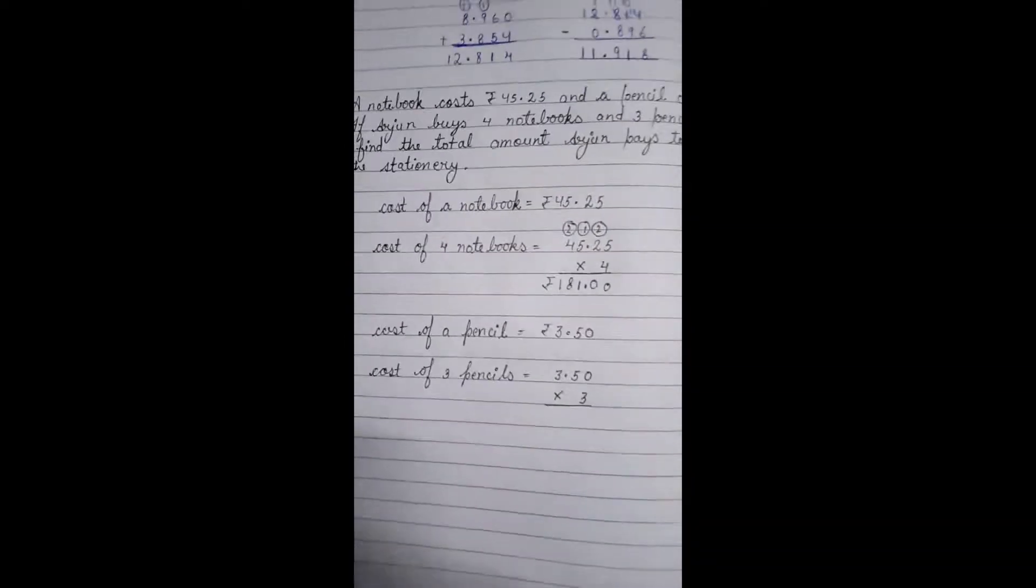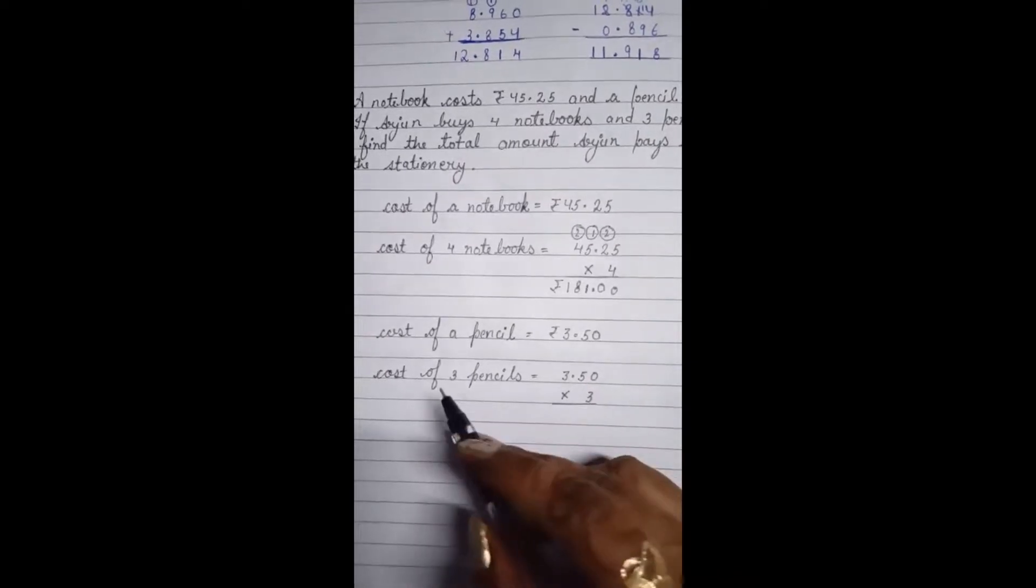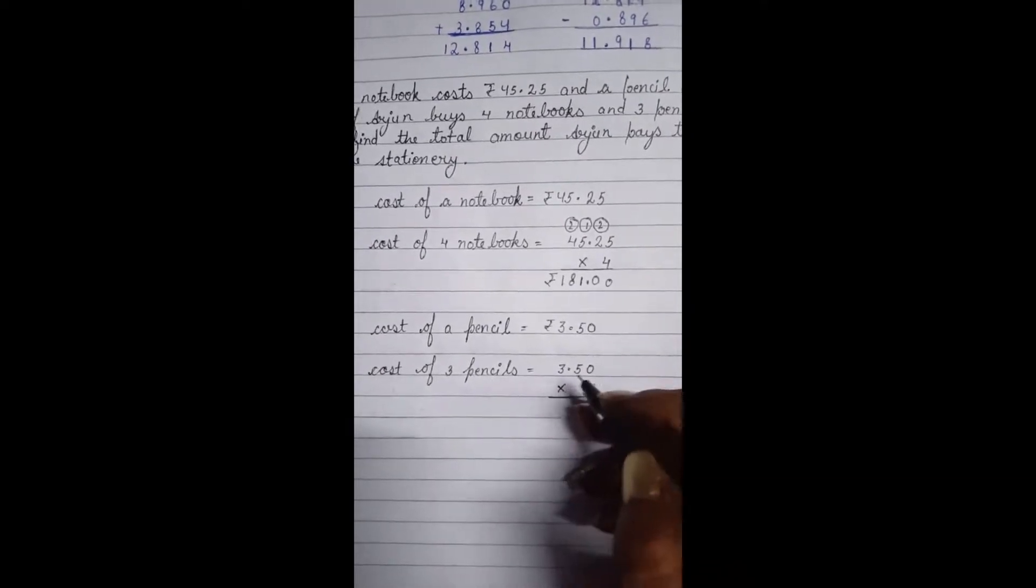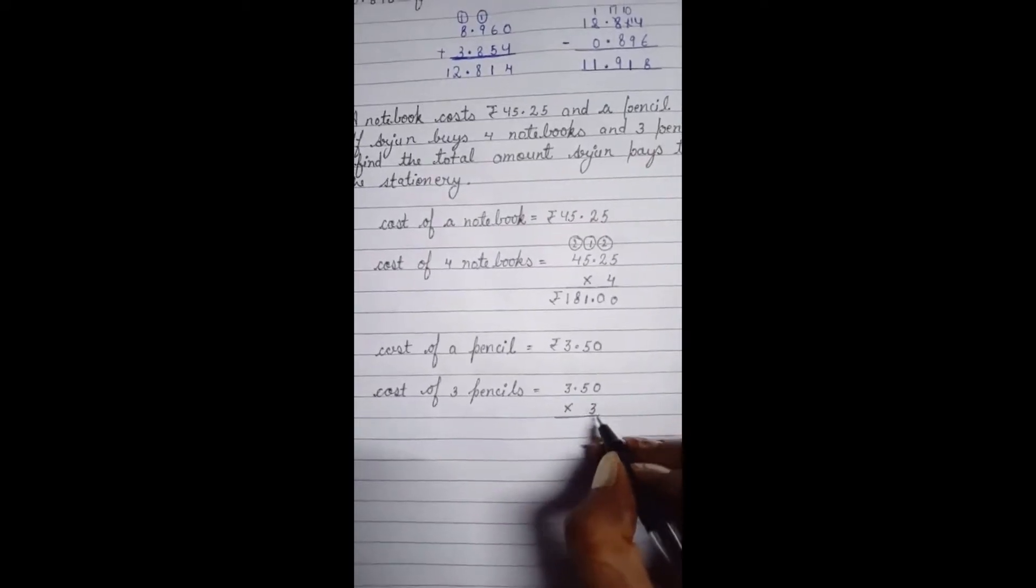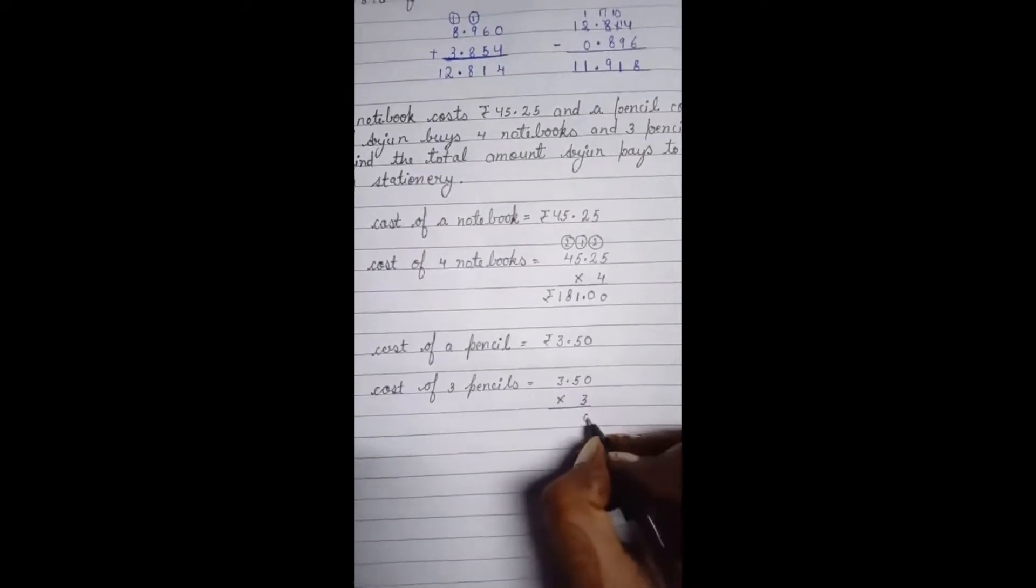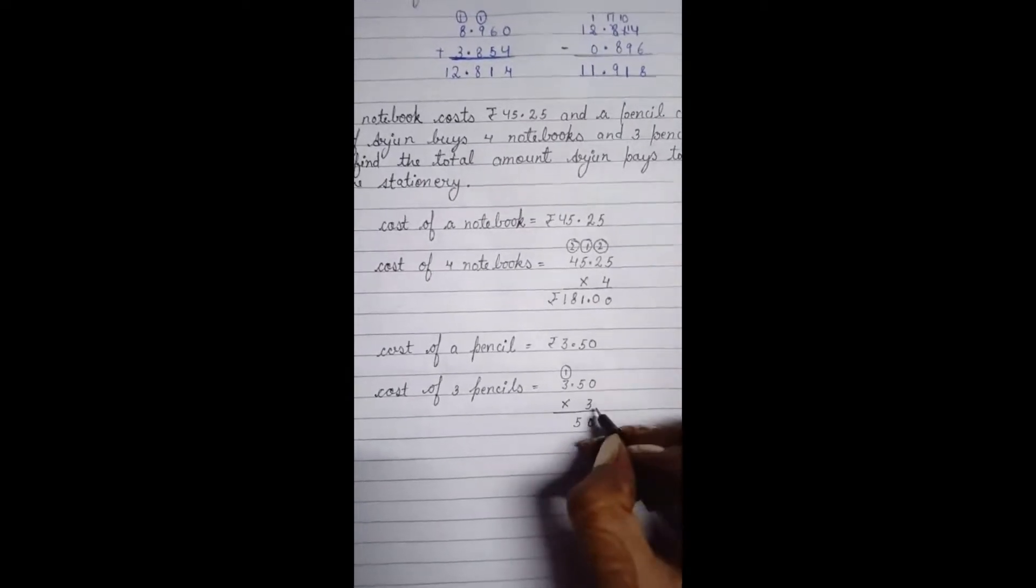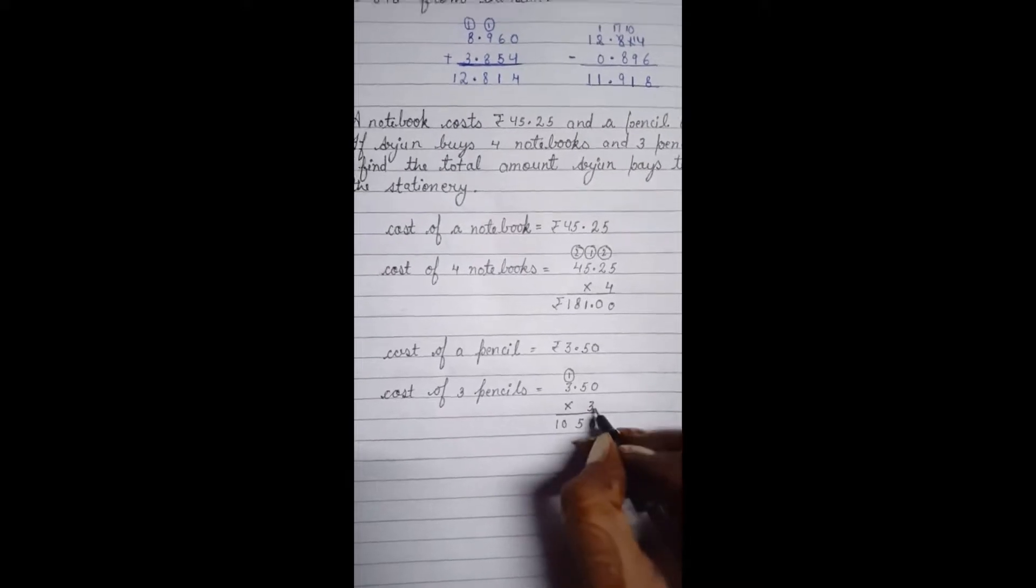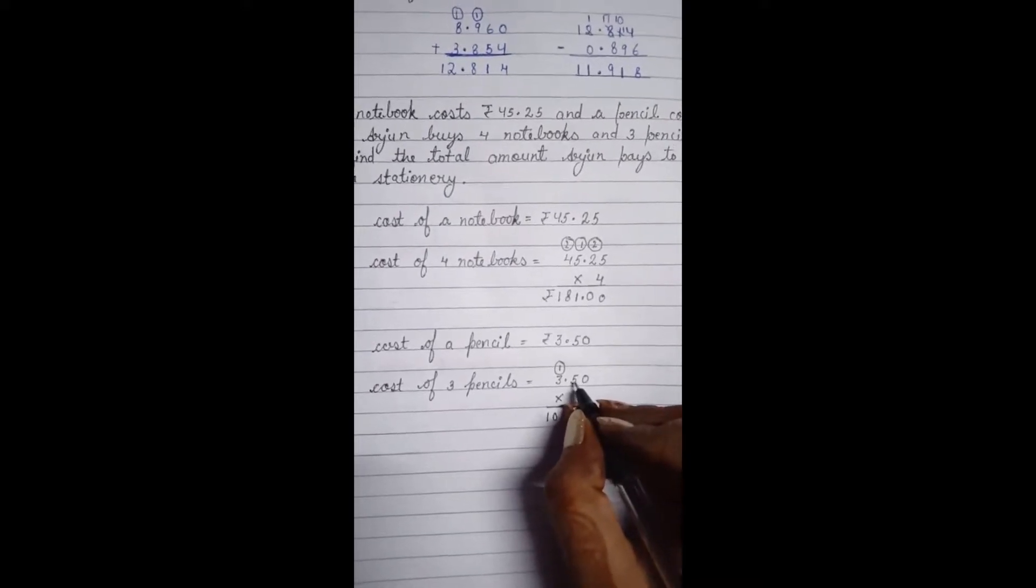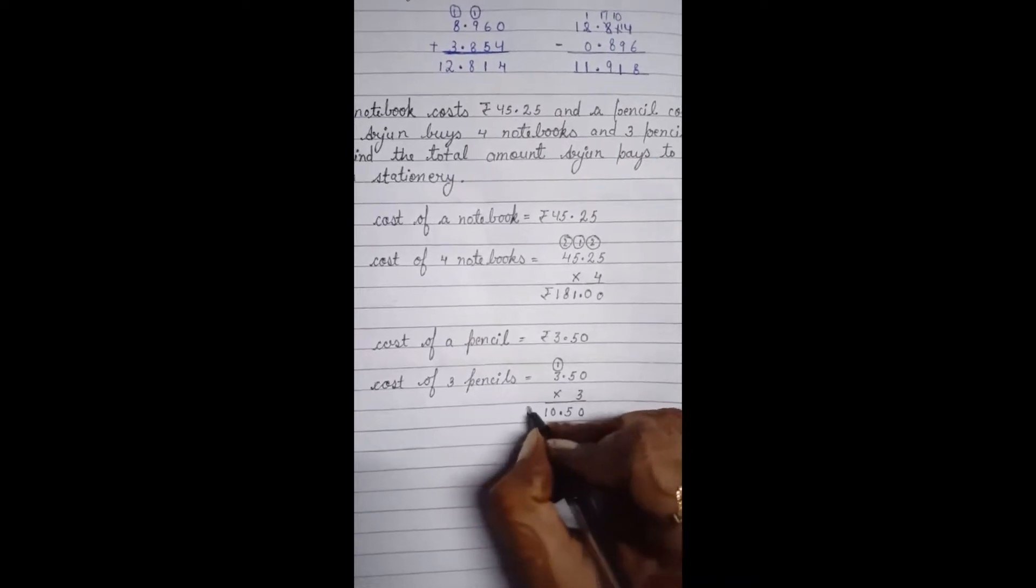Cost of a pencil is 3 rupees 50 paise. So cost of 3 pencils will be 3.50 multiply by 3. Let us start multiplying. 3 into 0 is 0, 3 times 5 is 15, 1 carry. 3 times 3 is 9 plus 1 is 10. Here we have got decimal after 2 digits, so here also we will insert a decimal point after 2 digits.